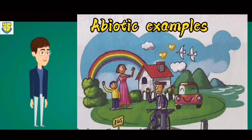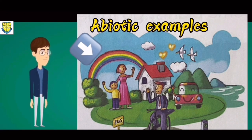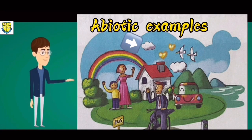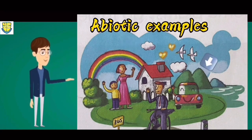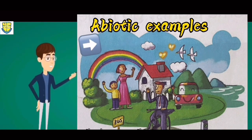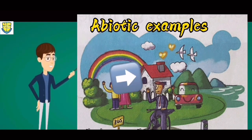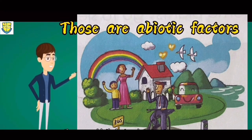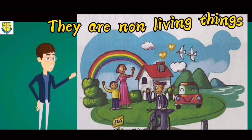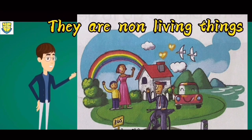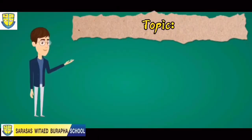We also have other examples of abiotic factors: rainbows, clouds, bicycles, mountains, the sky, and even a house. Those are abiotic factors because they are non-living things. Our topic for today is: light can change the way plants grow.